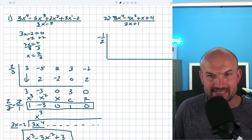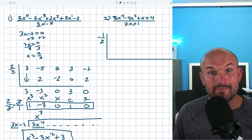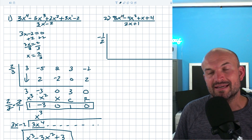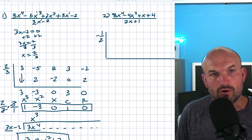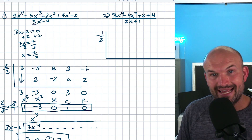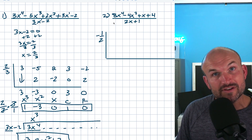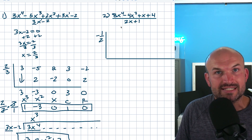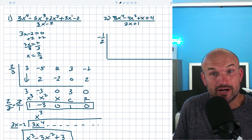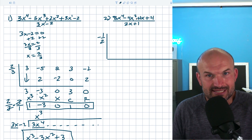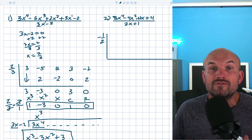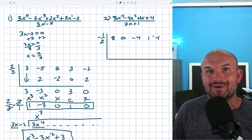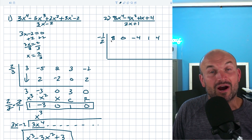Set negative one-half on the outside of the synthetic division box. Now a very common mistake: if students don't make a mistake with their k, the next biggest mistake is forgetting about place values. In this example I have degree four, three, two, one, constant — but I do not have an x cubed term. The coefficient of x cubed is still there; it's just zero. Also, this x does not have a number, so put a one there. Make sure you write down all coefficients for each term and use the placeholder zero for missing terms.